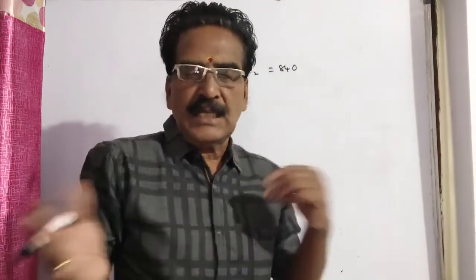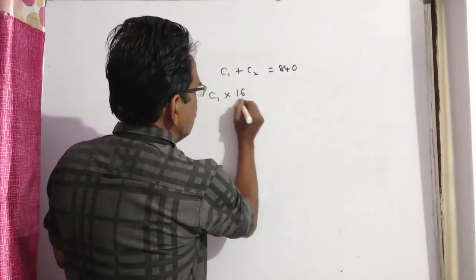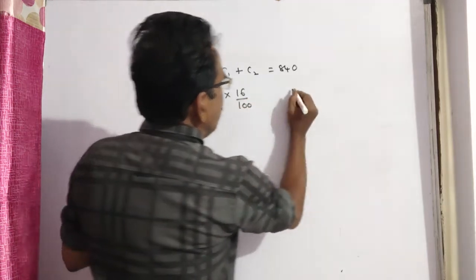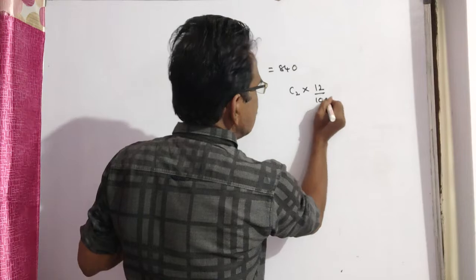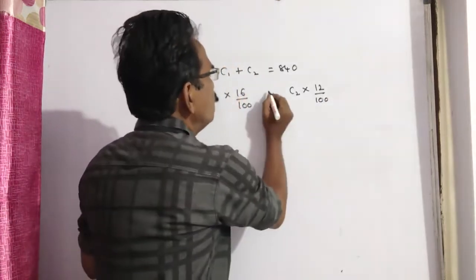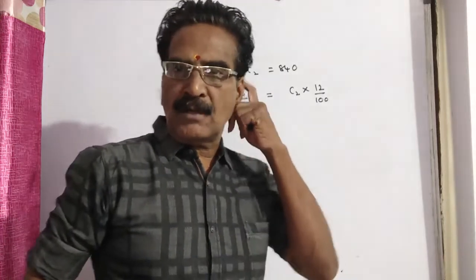Then there is no loss, no gain. So the profit on the first watch, 16%, and the loss on the second watch, equal to 12%, these two must be same because there is no gain, no loss in the whole transaction.